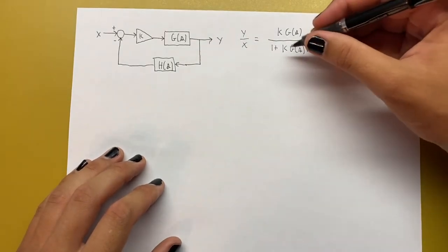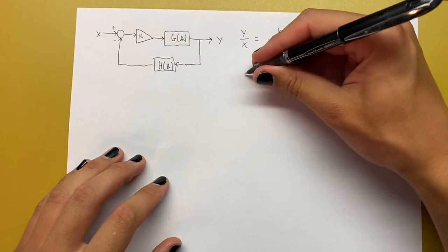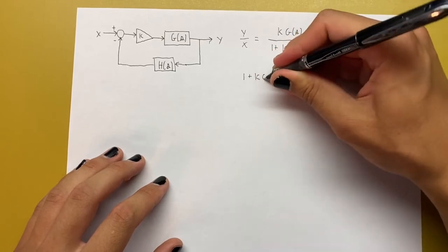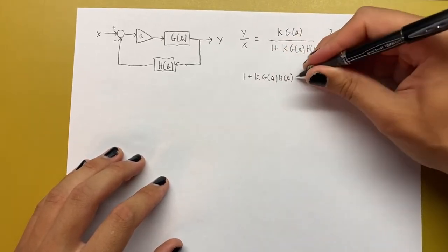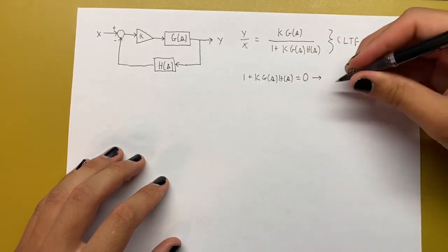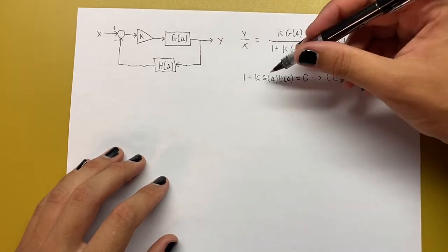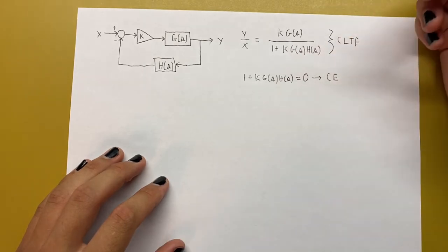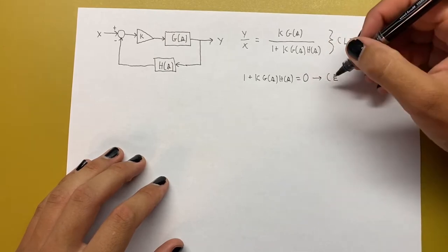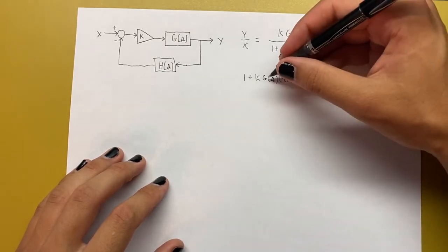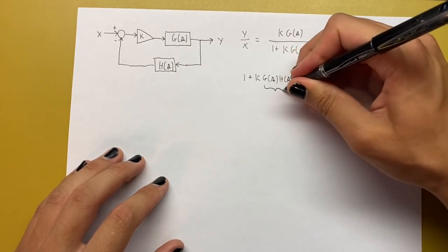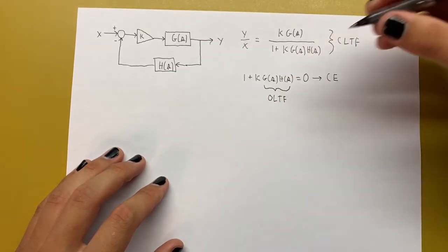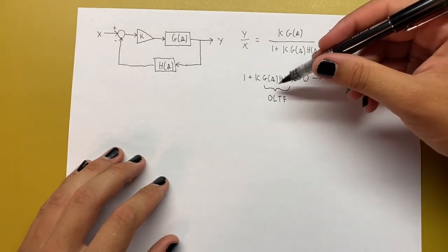The poles are where the denominator is equal to zero, so we can solve for those using what we call the characteristic equation, which in this case will be 1 plus k g of s times h of s, set equal to zero. The solutions to the characteristic equation are the values of s where the denominator equals zero — the poles of the system. We see that the only transfer function we need to worry about in the characteristic equation is g of s times h of s, so we give that a different name and call it the open-loop transfer function, or OLTF.